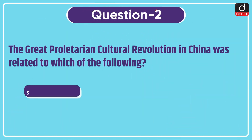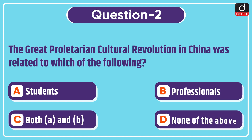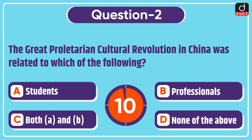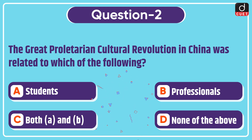Next question: the great proletarian cultural revolution in China was related to which of the following? Students, professionals, both A and B, or none of the above? The correct answer is option C, both A and B.